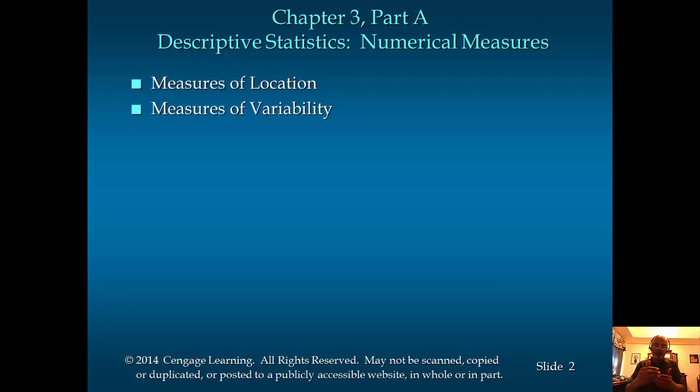In Chapter 2, we looked at tabular and graphical summarization. Here we're going to look at numerical measures that can be used to summarize data. There are two major categories of measures: measures of location and measures of variability.